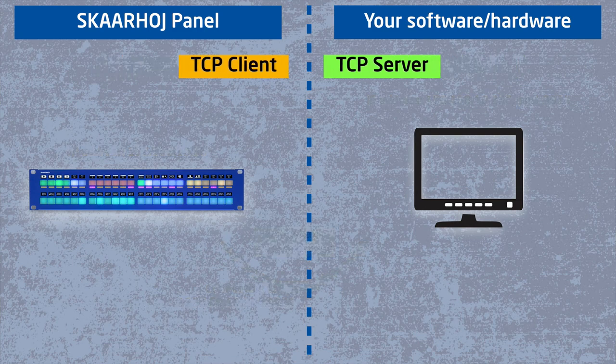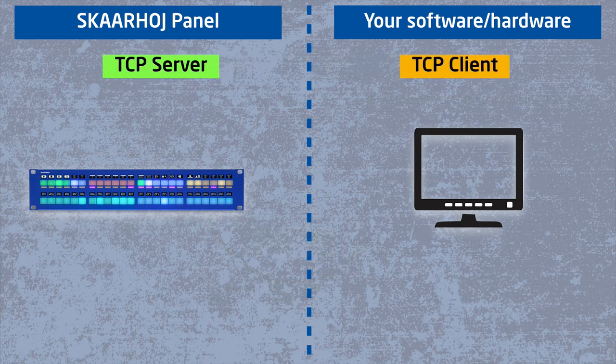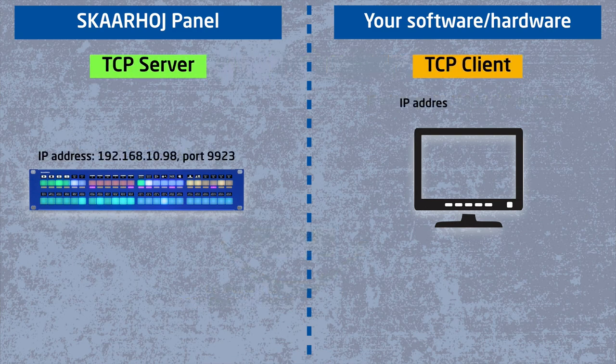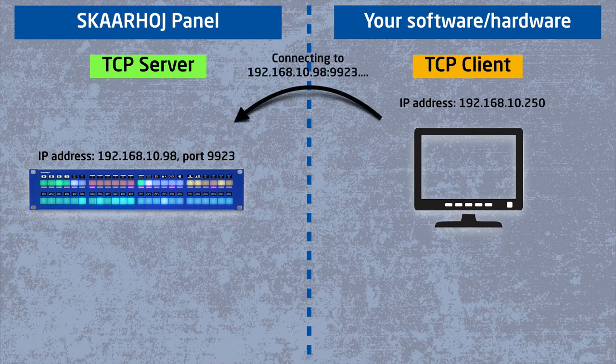Alternatively, the Skyhoy panel can work as a server instead — listening on port 9923 — and in this mode your system will be the TCP client that connects to the panel. In that mode the handshake is optional, but the data exchange between the panel and the application is exactly the same.